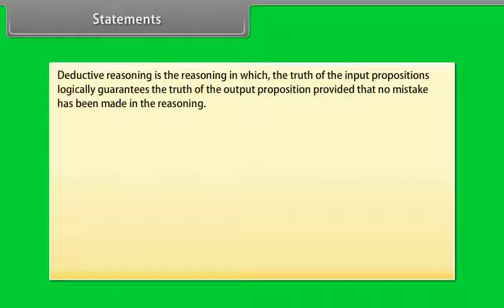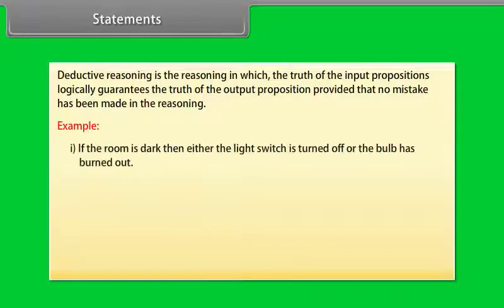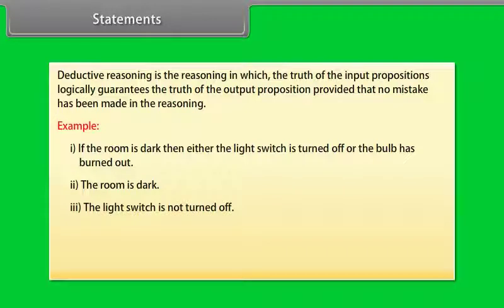Deductive reasoning is the reasoning in which the truth of the input propositions logically guarantees the truth of the output proposition, provided that no mistake has been made in the reasoning. Example: If the room is dark, then either the light switch is turned off or the bulb has burned out. The room is dark. The light switch is not turned off. Therefore, the bulb has burned out.